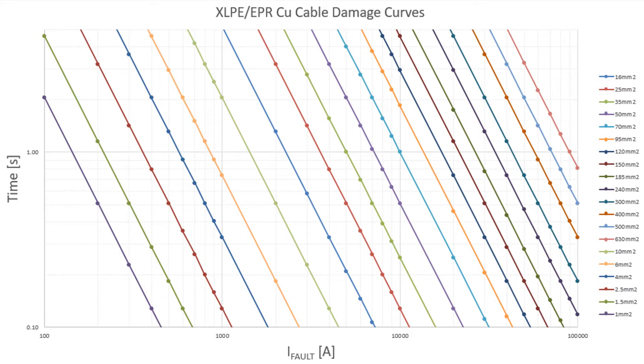Another way these damage curves are very useful is when we do our protection coordination studies to ensure that the protection device which protects the cable, that the actual trip current curve for the protection device lies below the cable damage curve with a sufficient margin of safety.